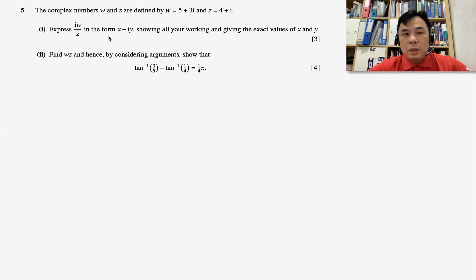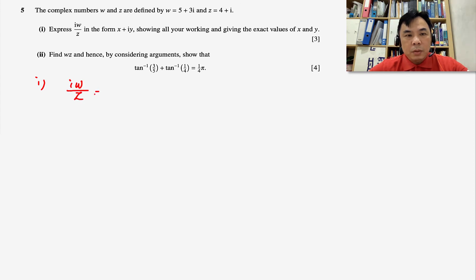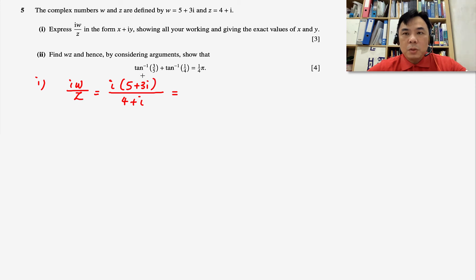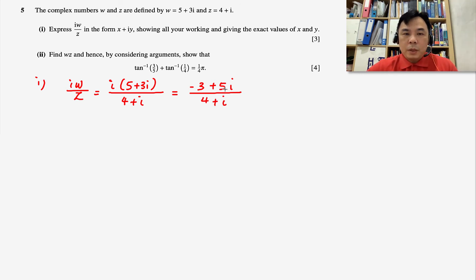Part one is quite direct. We have iw over z. We first simplify the numerator: i times (5 + 3i) gives 5i + 3i², and since i² = −1, the term 3i² becomes −3. So the numerator simplifies to −3 + 5i. From here we are going to rationalize.